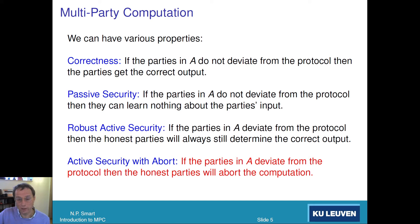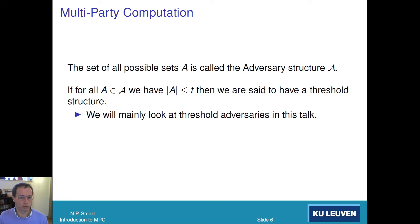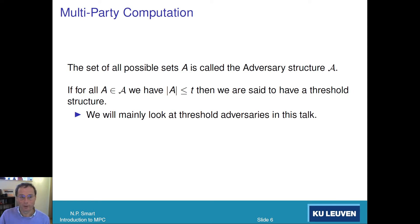What are the set of bad guys? Suppose we have four parties — the set of all possible sets who could be bad is called the adversary structure. An important class is threshold adversary structures. Imagine we take four parties with threshold two: the possible bad sets could be party one alone, party two alone, party three alone, party four alone, or any pair — party one and two, one and three, one and four, two and three, two and four, or three and four. But you can't have party one, party two, and party three acting together as bad guys. That's what threshold two means, and you can clearly generalize that.